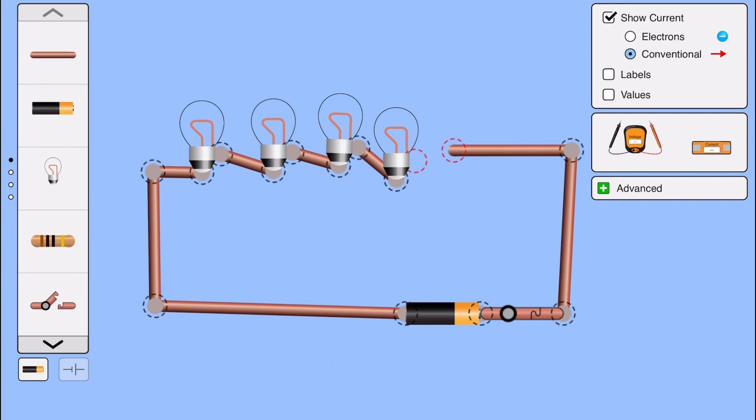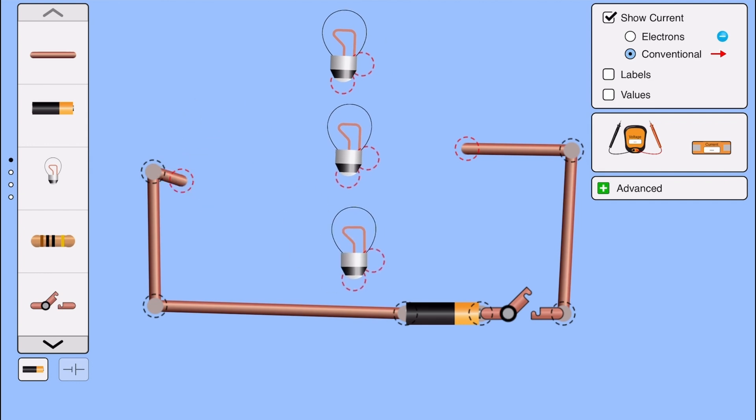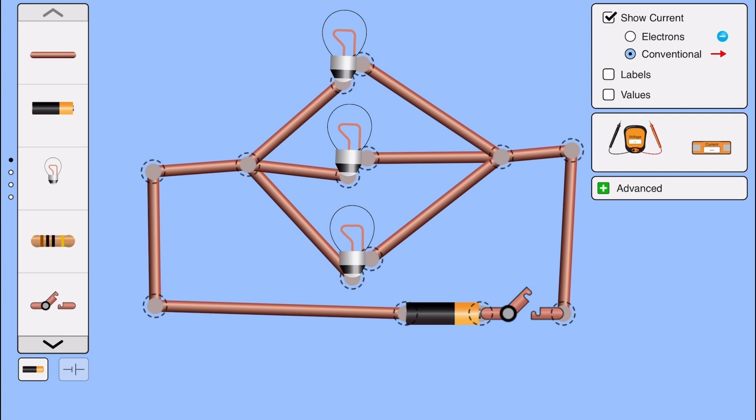Now let's try a different setup. Now let's connect each of them separately across the cell. We bring the bulbs back. We connect the wires separately across the cell. See this. This type of connection is called a parallel connection.